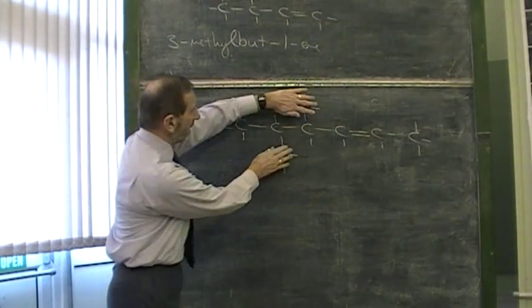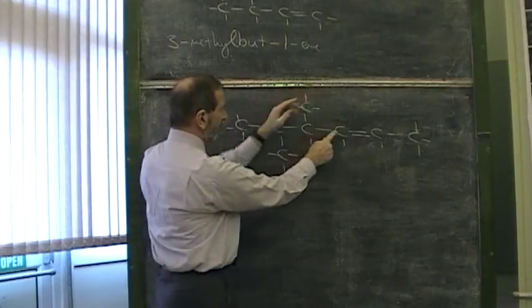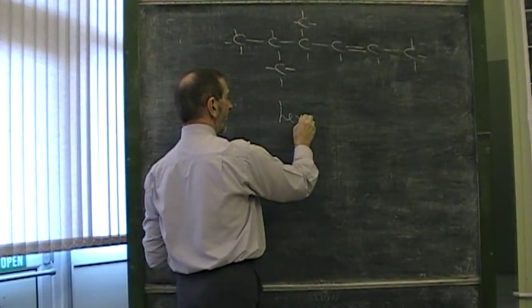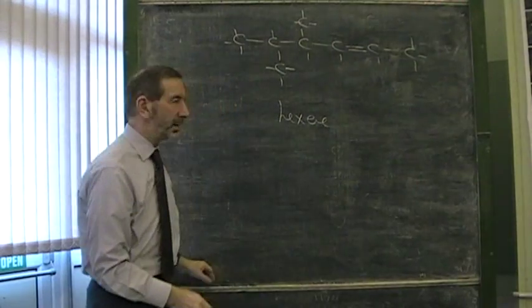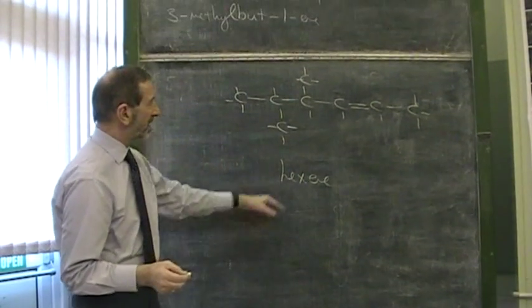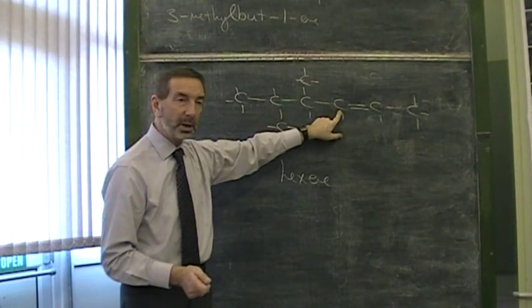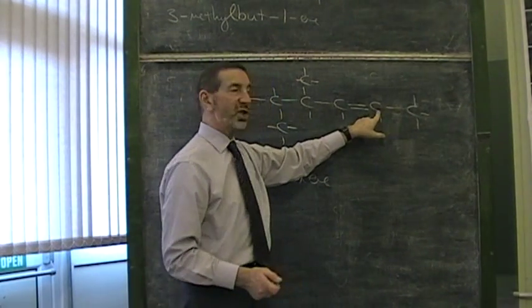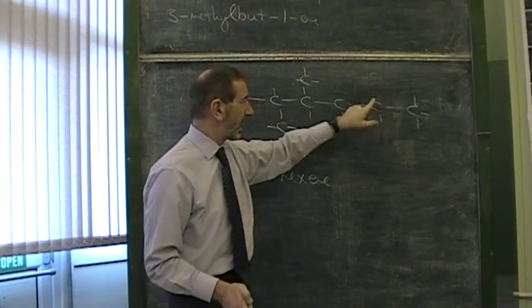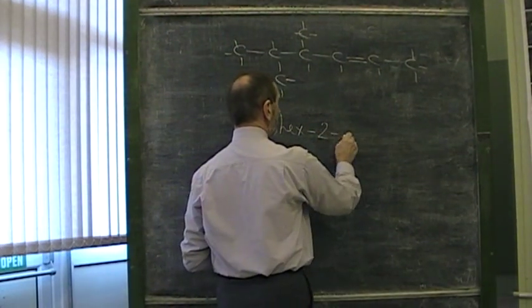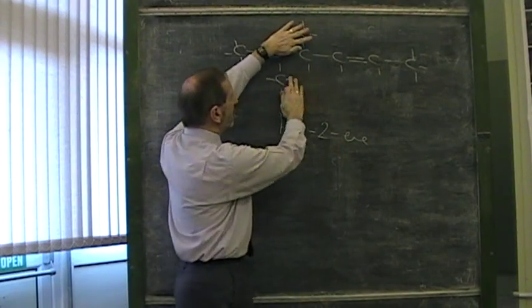How do we name this alkene? Again, cover up the branches. One, two, three, four, five, six. Six is hex. Hexene. But that's not good enough. We need to see whereabouts the double bond is. Is it on the one, two, three, fourth carbon atom? Or is it on the one, two, the second carbon atom? We give it the lowest number possible.